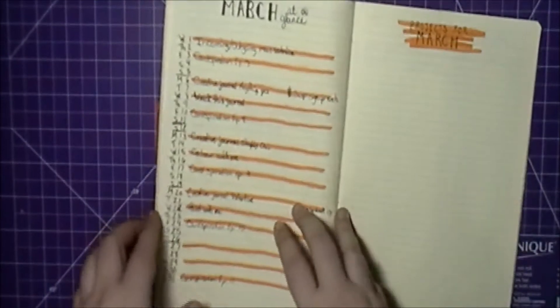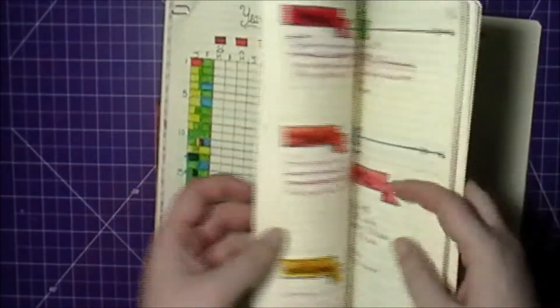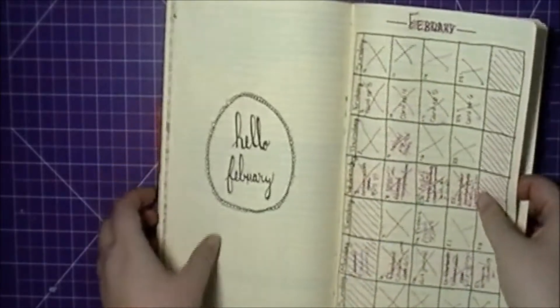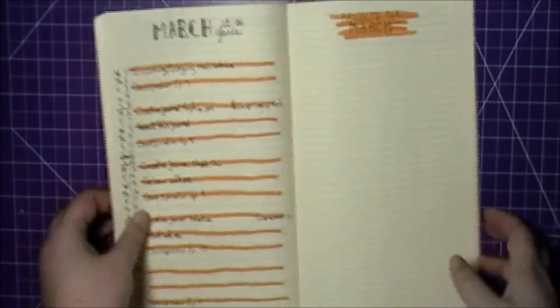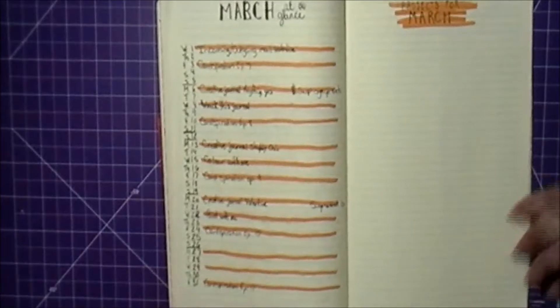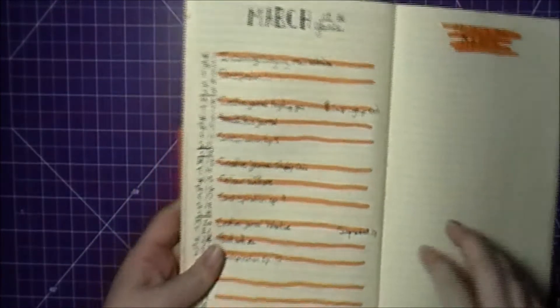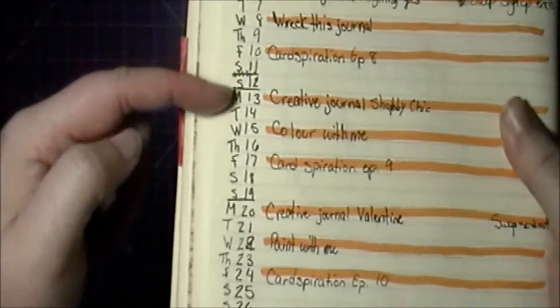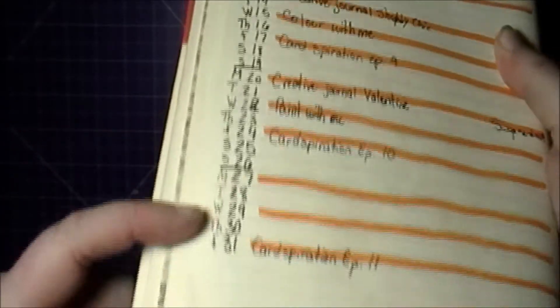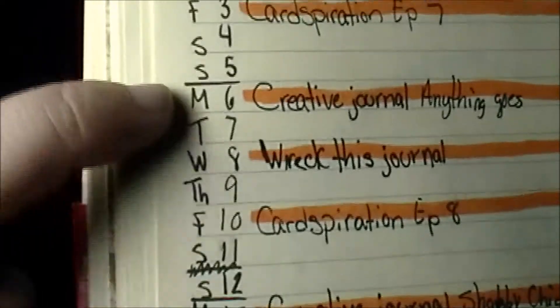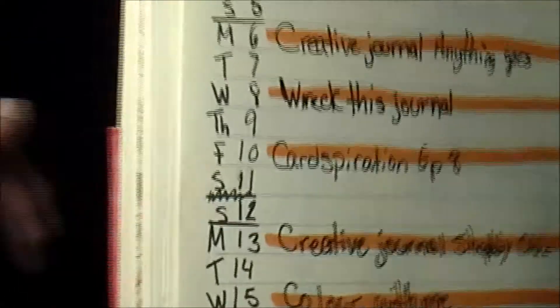Instead of doing a calendar like I did in February, I decided to do a little march at a glance. As you can see, I got the days of the week going down the side and I have it split up. I start my weeks on a Monday.